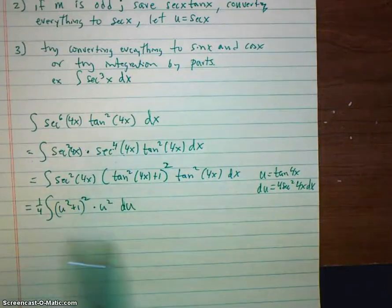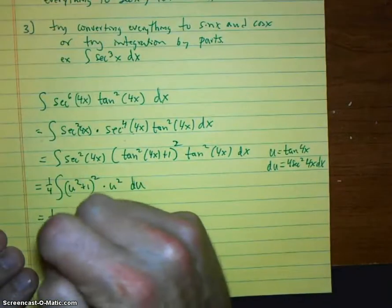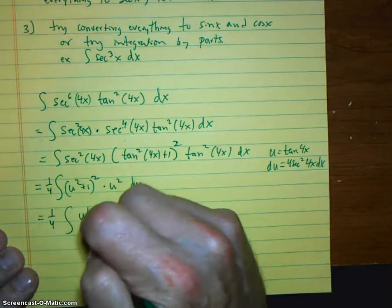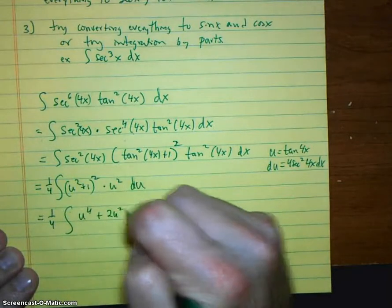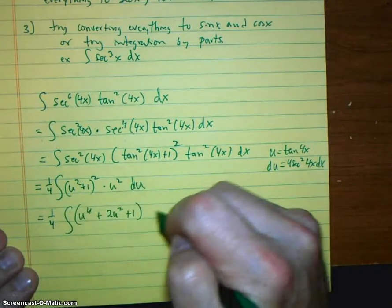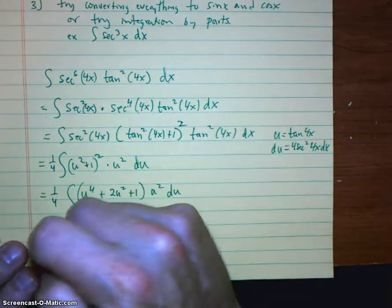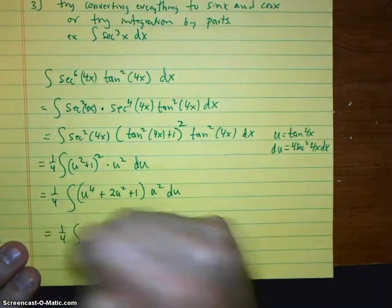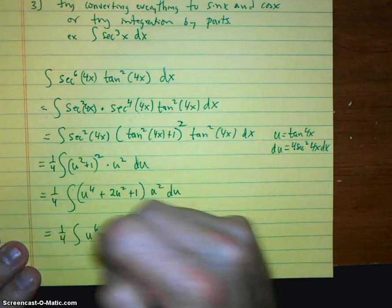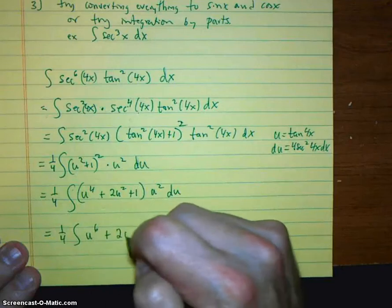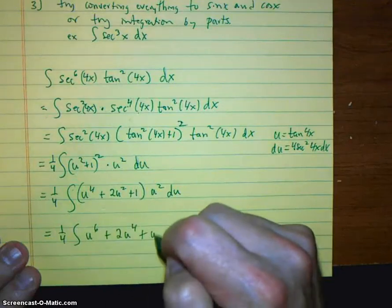Foil this thing out. That's one-quarter integral u to the fourth plus 2u squared plus 1. And then that's times u squared du. So it's one-fourth integral u to the sixth plus 2u to the fourth plus u squared du.